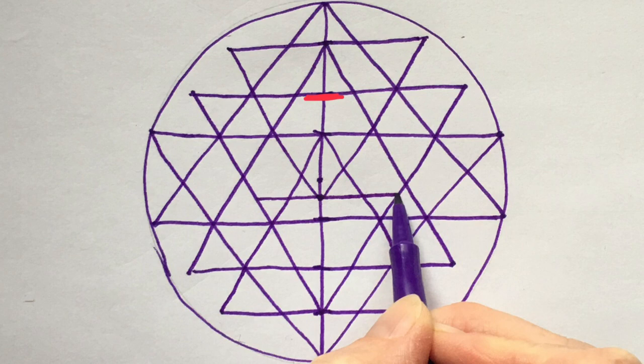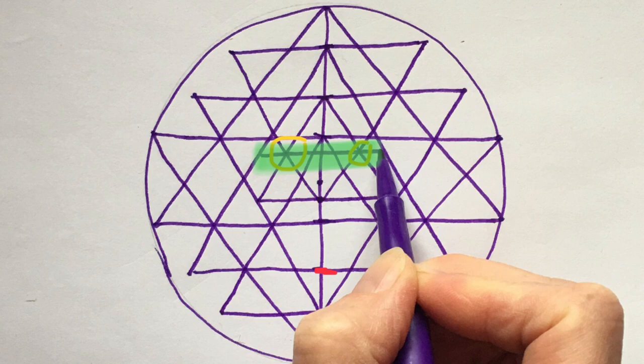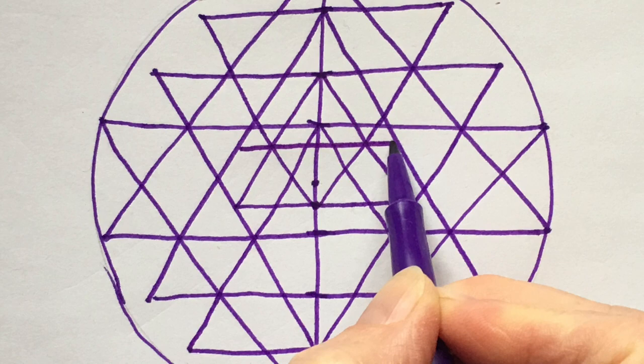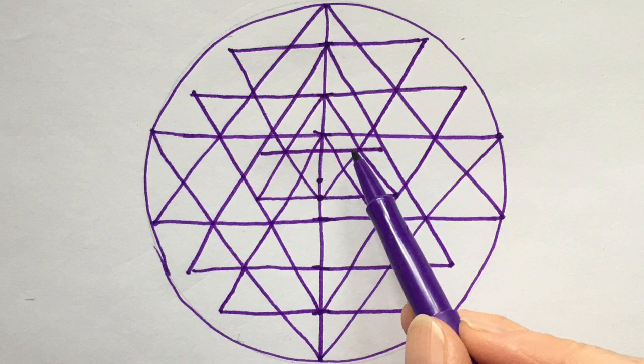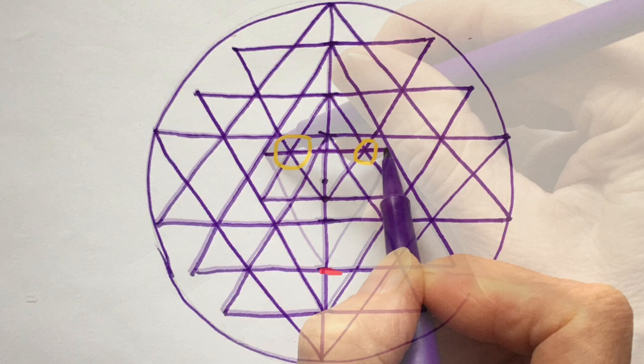Next draw the horizontal line that goes through two intersecting points. This horizontal line creates a downward pointing triangle. Draw both sides of the triangle.